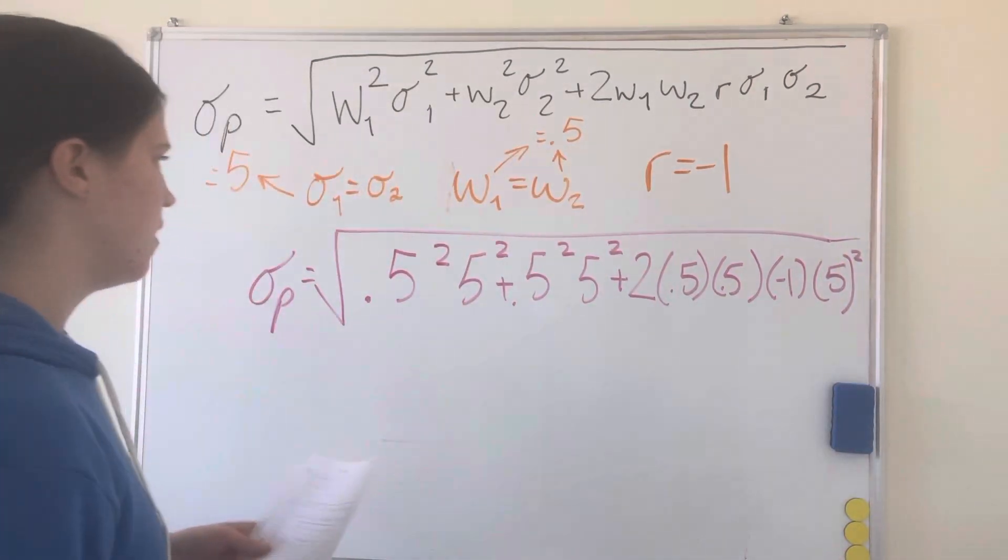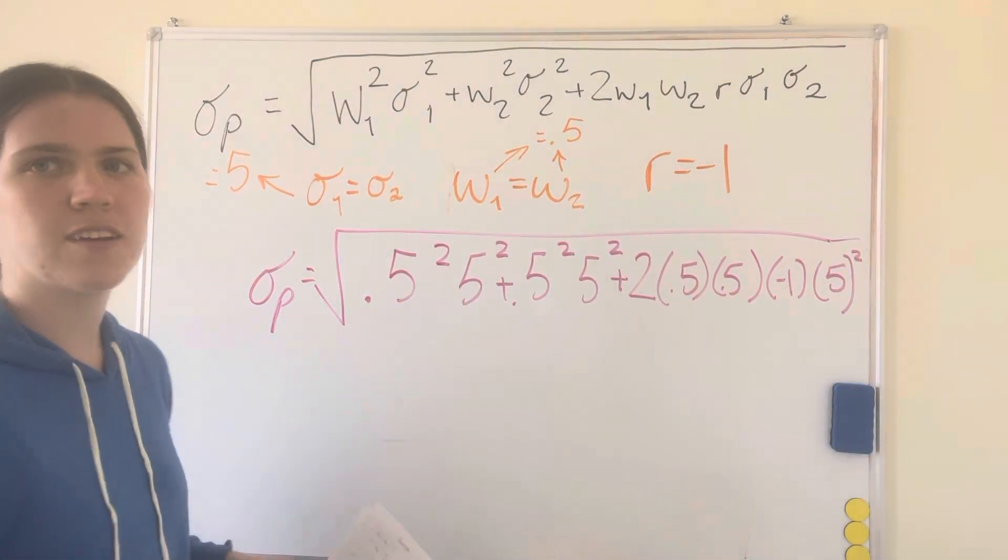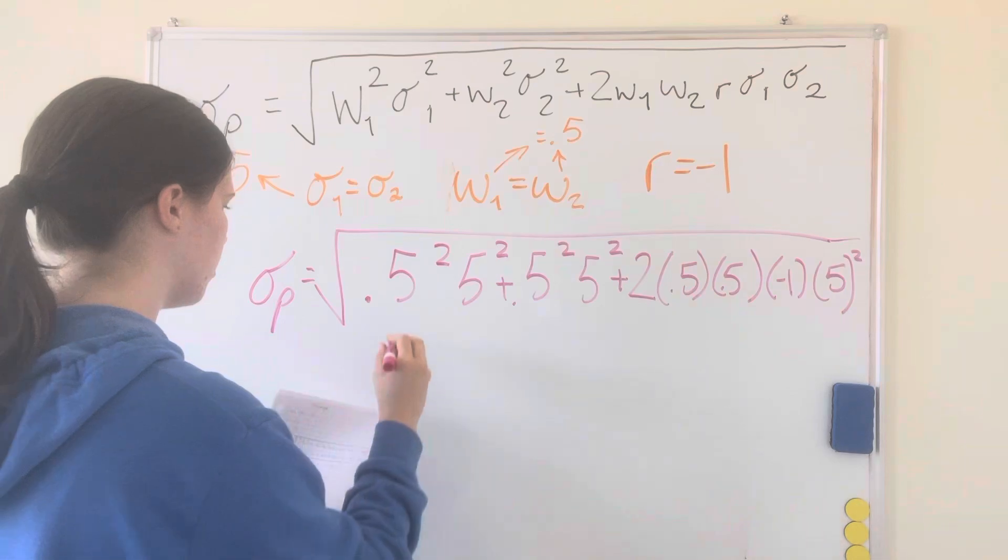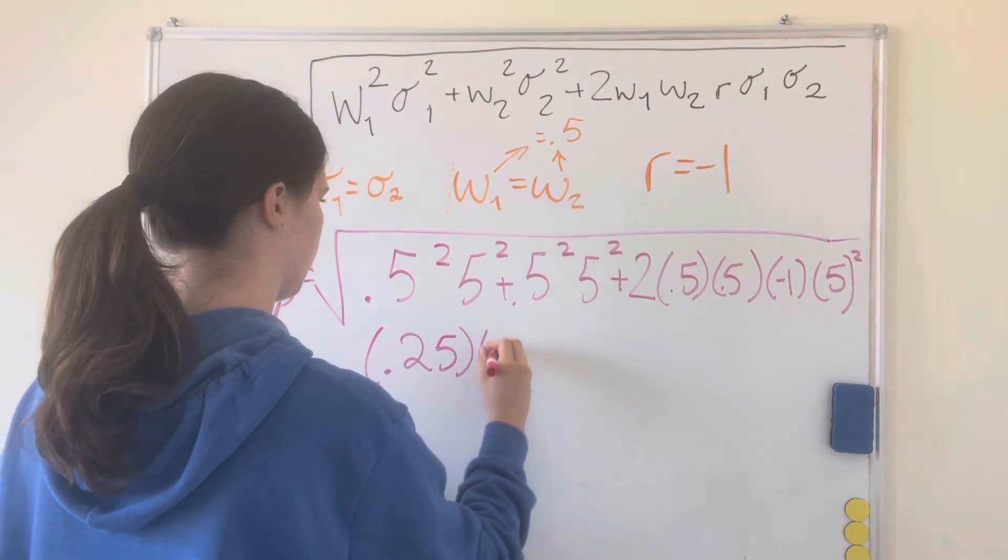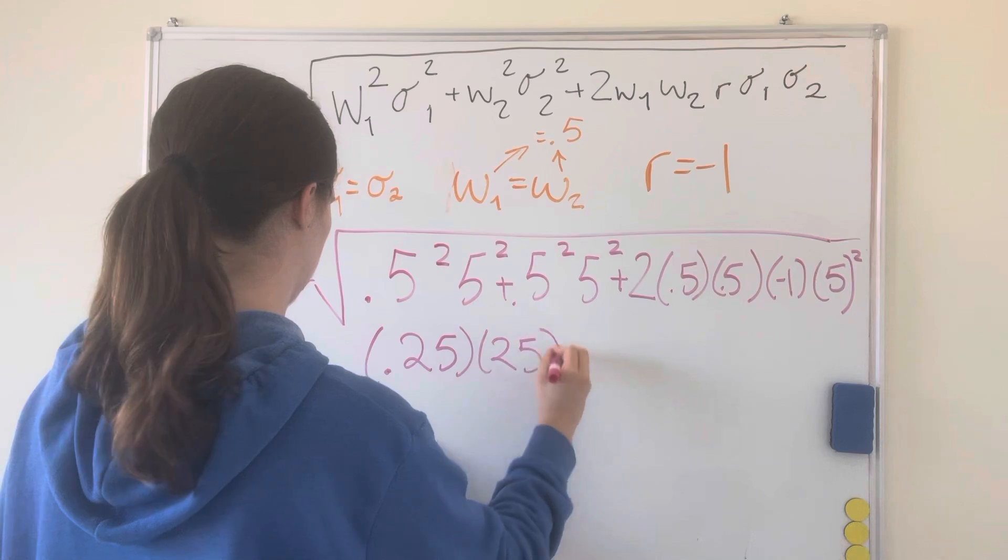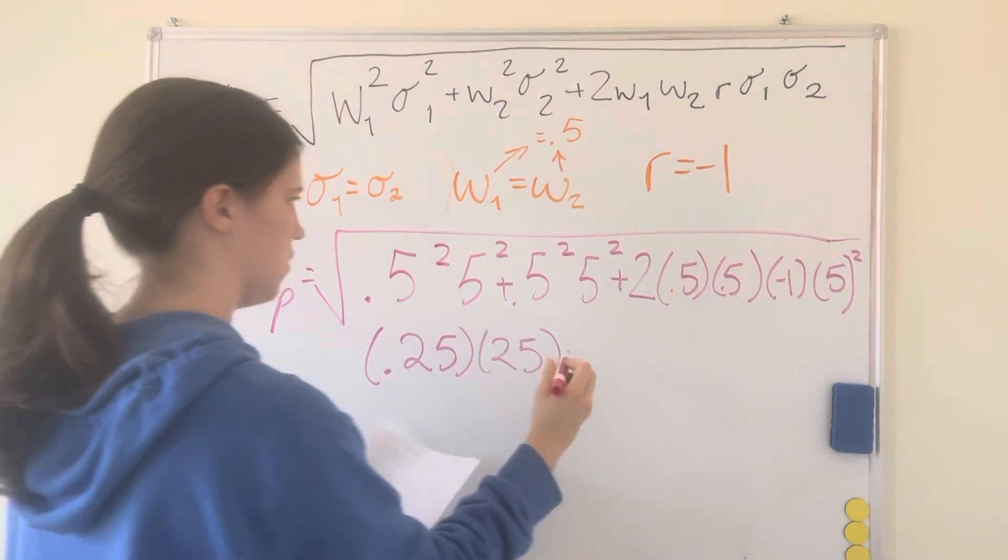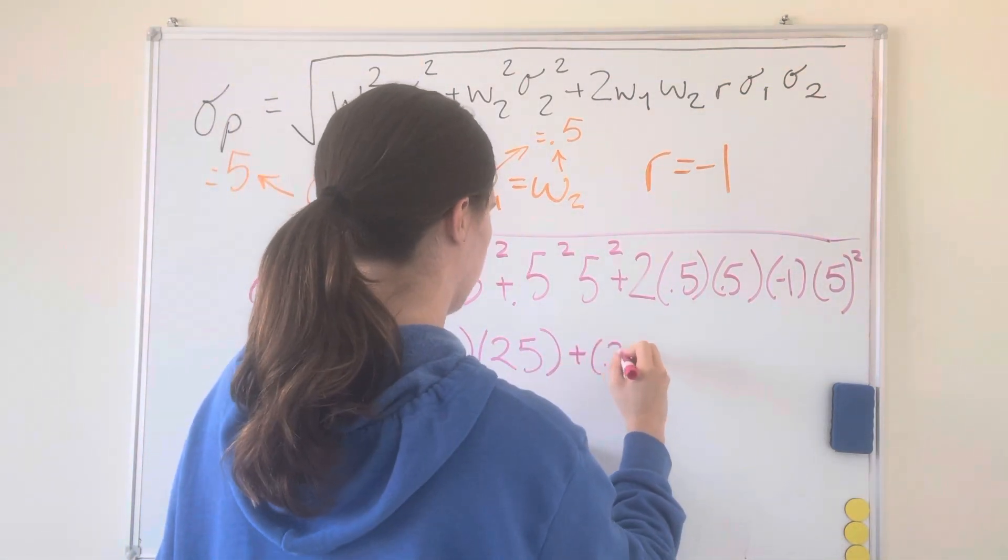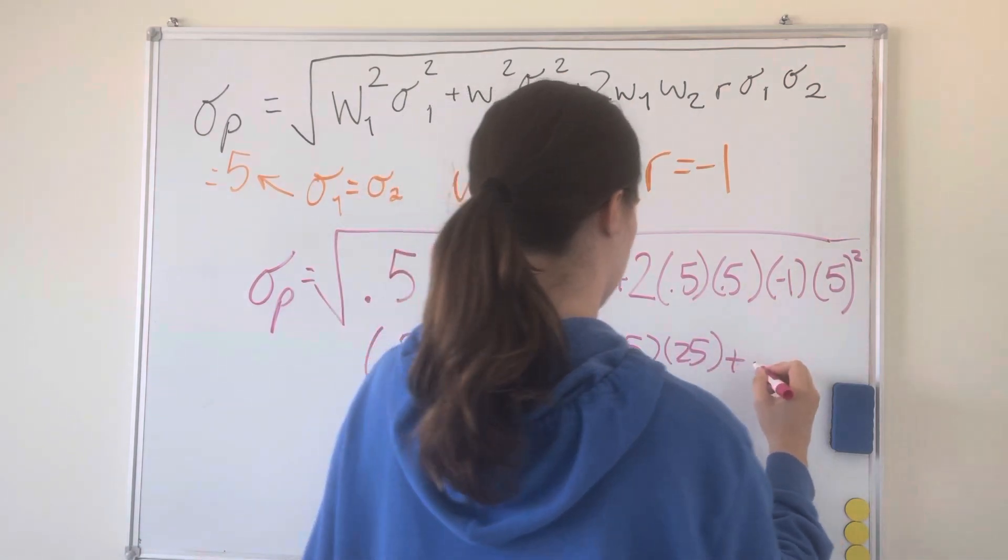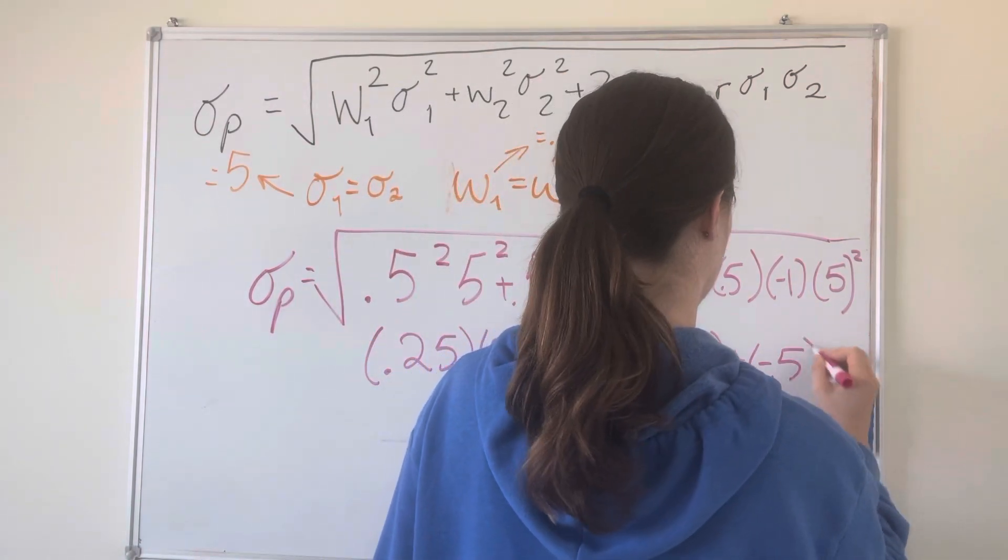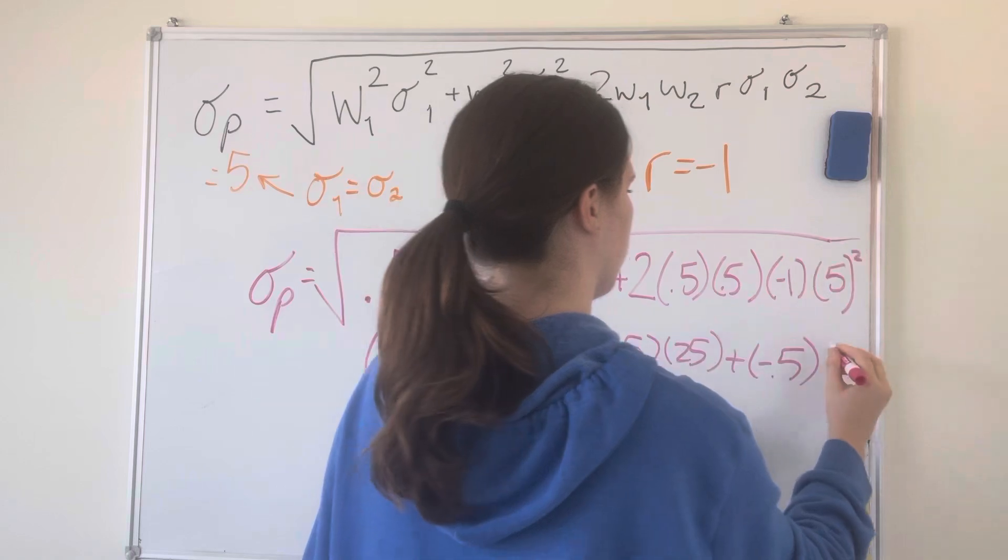All right, awesome. And so if you put this in your calculator in the correct order, it'll be 0.25 times 25 plus another 0.25 times 25 plus negative 0.5 and then 5 squared, 25.